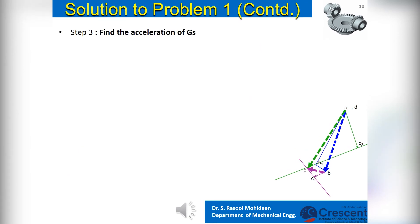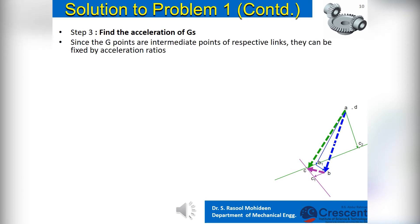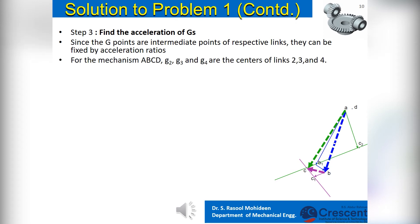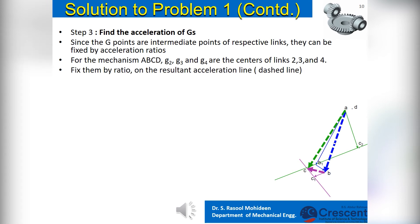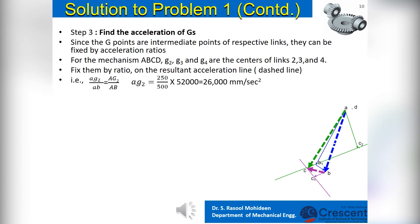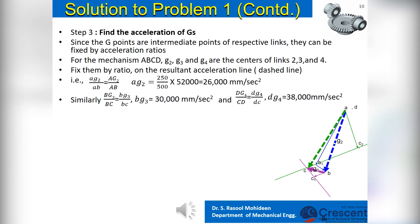In Step 3, we will find the acceleration of mass centers of links. Since the G points are intermediate points of their respective links, they can be fixed by considering the final acceleration ratios. For the mechanism ABCD, G2, G3 and G4 are at the midpoints of links 2, 3 and 4. Fix them by ratio on the resultant acceleration line shown as dashed lines. That is, acceleration AG2 divided by acceleration AB equals the length of link AG2 in the mechanism divided by the length of link AB. Similarly find G3 and G4 in the acceleration diagram by considering the length and acceleration ratio of the respective links.